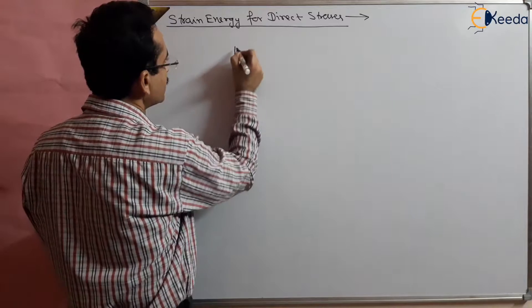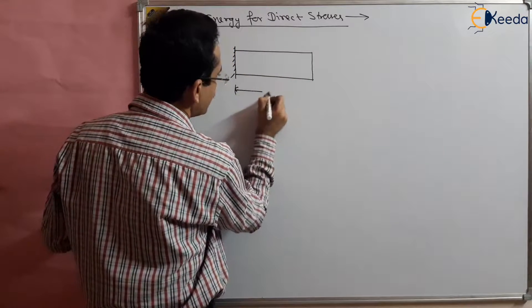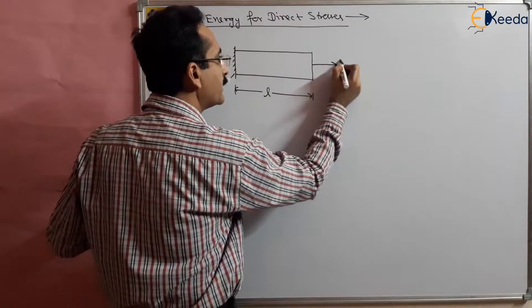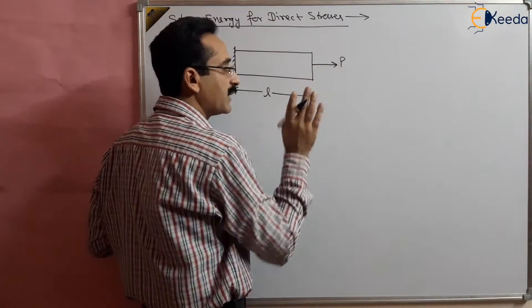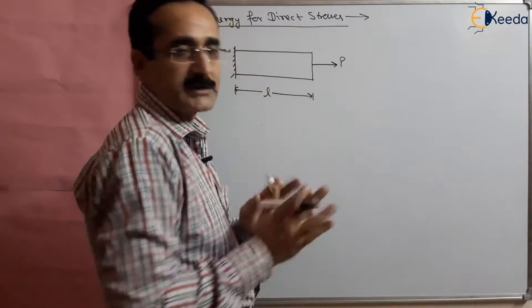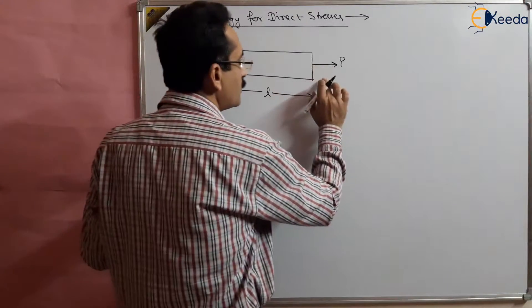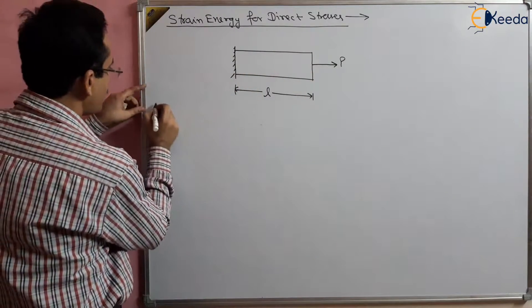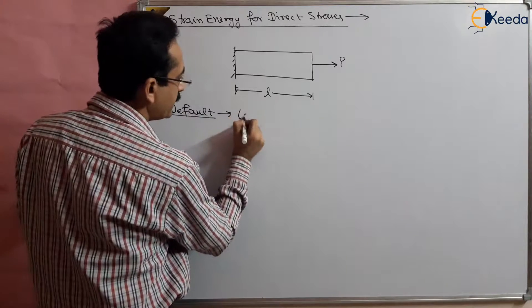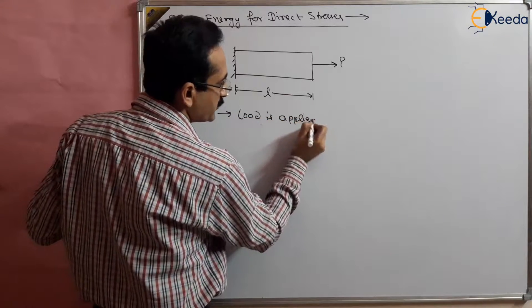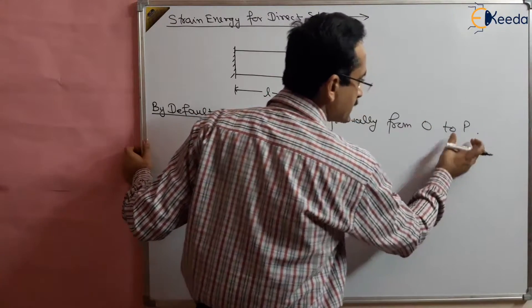Suppose we have a bar of length L and a load is applied. For direct stresses, the load is applied gradually by default — if nothing is mentioned, it is assumed the load is applied gradually. If the load is applied suddenly, that should be explicitly mentioned. So the load is applied from zero Newton to P Newton gradually.